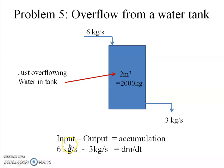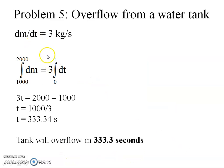Applying the general material balance: input minus output equals accumulation. Input is 6 kg/s, output is 3 kg/s, and accumulation is dm/dt. Rearranging: dm/dt = 6 − 3 = 3 kg/s. Separating variables and integrating from m = 1000 kg at t = 0 to m = 2000 kg at time t, we find the tank will overflow in 333.3 seconds.